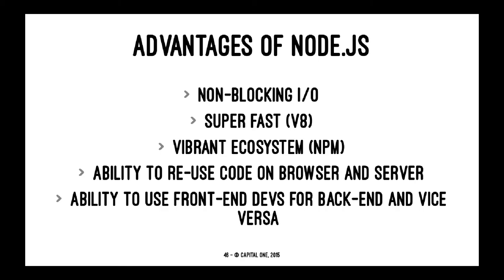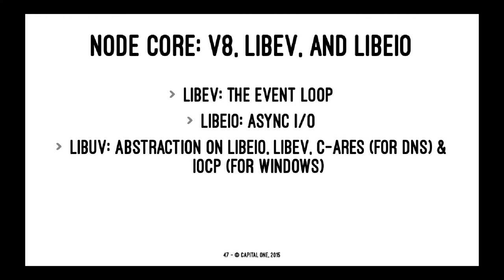We can reuse code, and the notion of a back-end developer is dying because now front-end developers can do back-end work. At its core, Node.js is three things: V8, libev, and libuv — one is the event loop, another is asynchronous I/O, and another is abstraction.